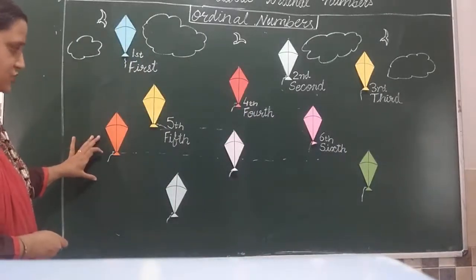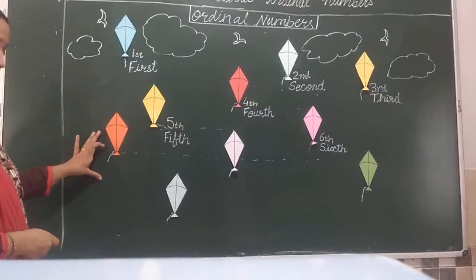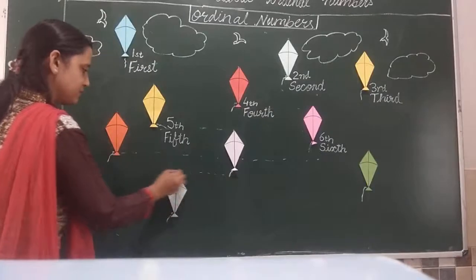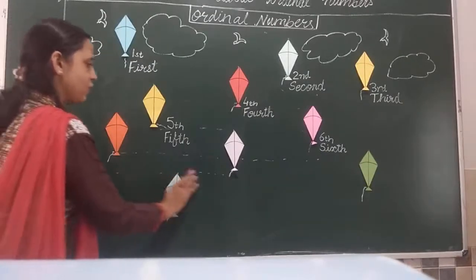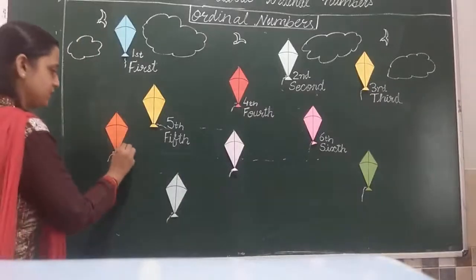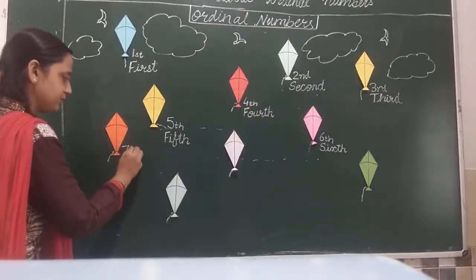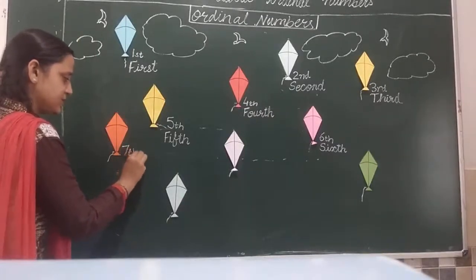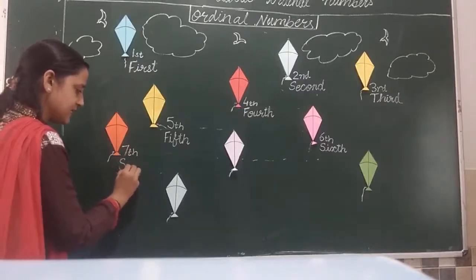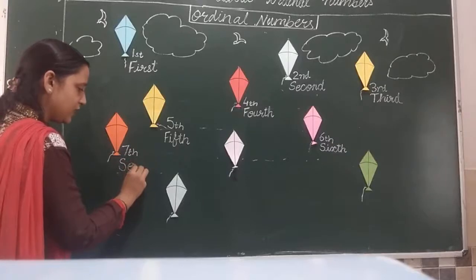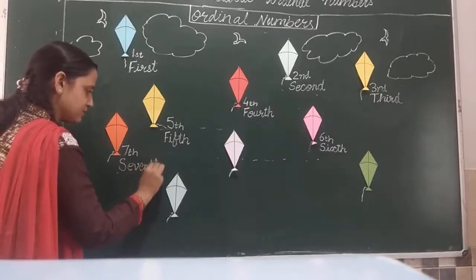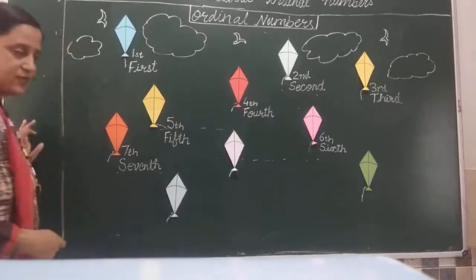This orange kite — check the position. Yes, orange kite is at the 7th position. So we write 7th. S-E-V-E-N-T-H. 7th.